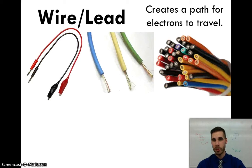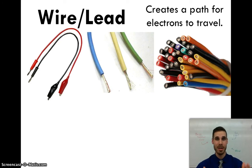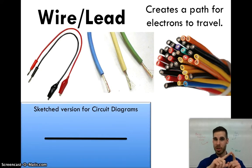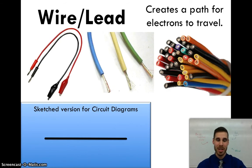Let's take a look at the first circuit component, which is a simple wire, also sometimes called a lead. A wire is just something that allows electrons to move — it creates a path for electrons to travel. The way we're going to draw this in circuit diagrams is really simple: it's just going to be a straight line. Usually we'll use rulers to make sure our lines are perfectly straight, but there's not that much complexity to this. It is, after all, a line.